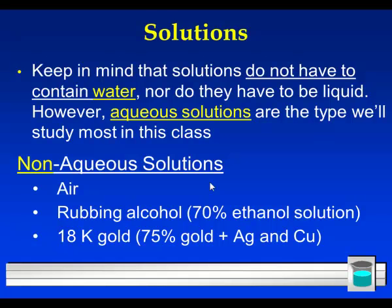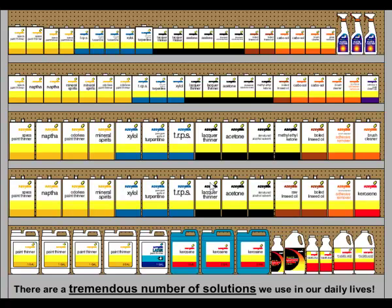18 karat gold is another example of a solution. It's a solid, but it's a homogeneous mixture of different substances. In the case of 18 karat gold, it's 75% gold with a varying composition of silver and copper depending on the color desired — more silver for a pale color, more copper for a more yellow color.